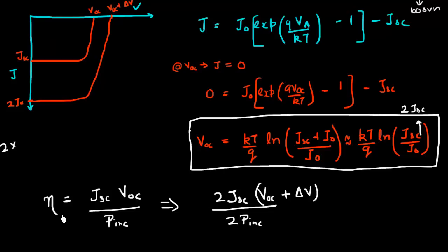So my efficiency, if I compare it at a concentration of 1 sun versus if I compare the efficiency at the concentration of 2 suns, I see increase in my efficiency. So what this analysis is suggesting is that my efficiency increases as I increase the concentration of the light.